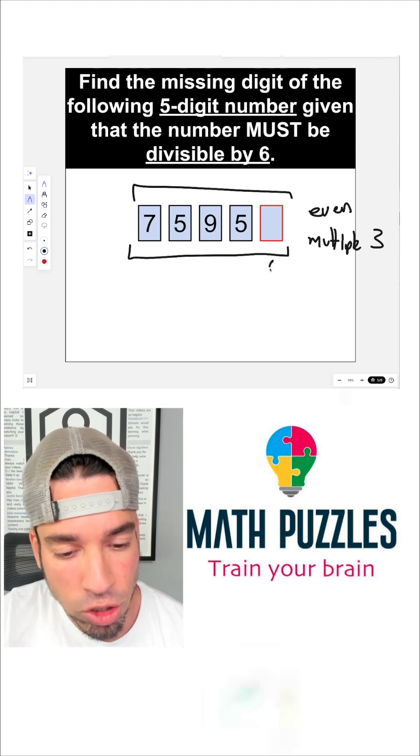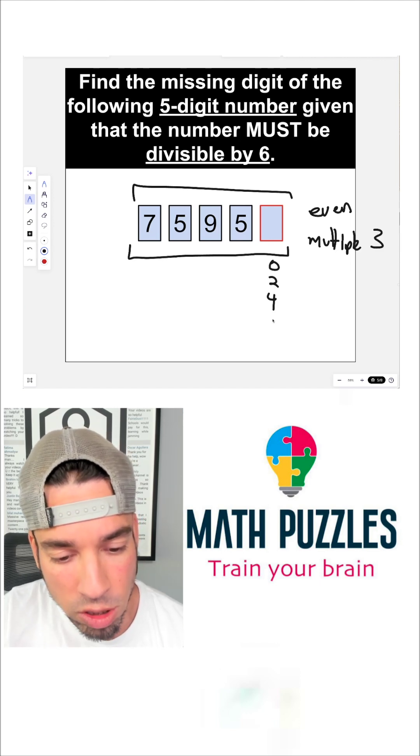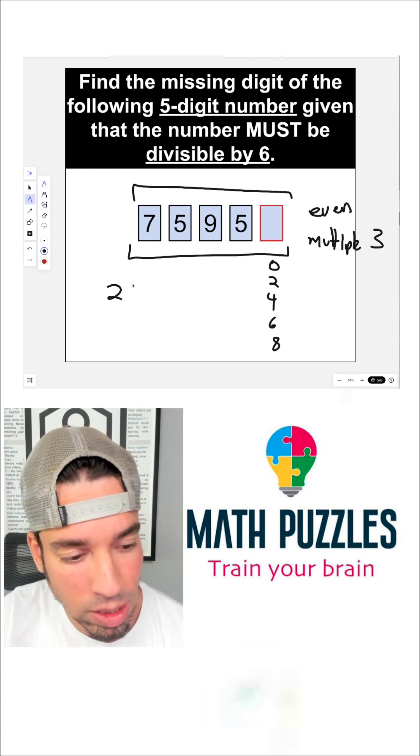So if we know it's even, our options are zero, two, four, six, and eight. Now, what's the sum of these numbers? 26.